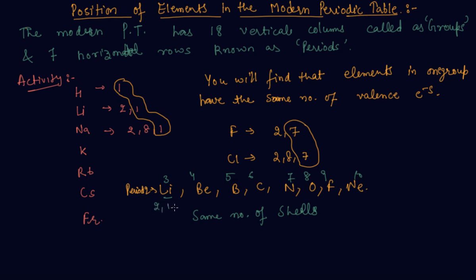If I write the electronic configuration, this is 2,2, then 2,3, then 2,4. You can see that the valence electrons are not the same in case of periods, but they have the second shell. These shells are K, L, M, N. They all belong to shell L, so they are arranged in a single period.